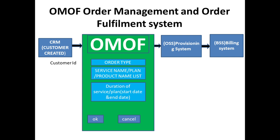While placing the order, this particular customer ID is taken as an input in the OMOF system. It will take input like what kind of order that particular customer wants — whether they want activation of service, deactivation of service, suspension of service, or termination of service. The customer also specifies which particular service to be activated or terminated — for example, they want to activate a particular SMS plan of 100 SMS per day.